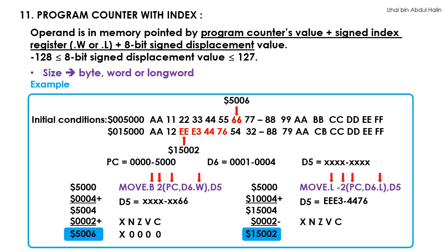This is a non-zero result, causing the Z flag to be zero. If converted to binary, the MSB of the operand is 1, thus the negative flag is set to 1. The status register's value is shown after the execution of this instruction. Note that the source operand using this addressing mode can also be of word length. As a conclusion, the operand resides in memory — the 68K microprocessor will add up the program counter's value, the value in a signed index register which can be any one of the data registers, and an 8-bit signed displacement value to obtain the operand's address. The operand is then copied from this address into the destination register. It's that easy.